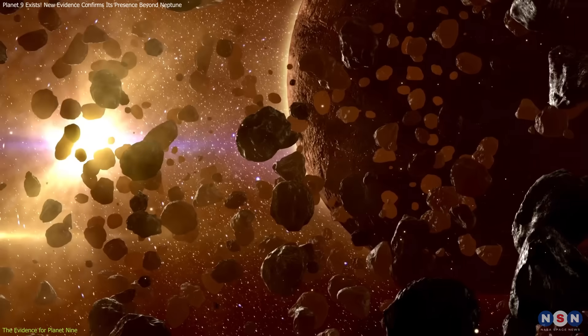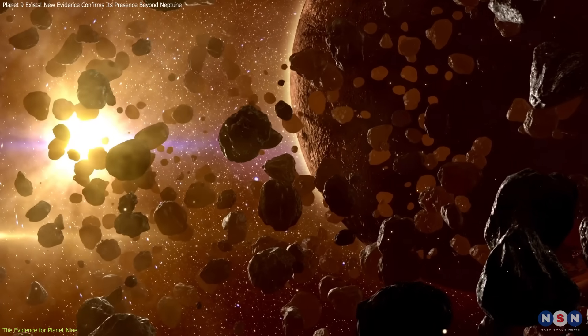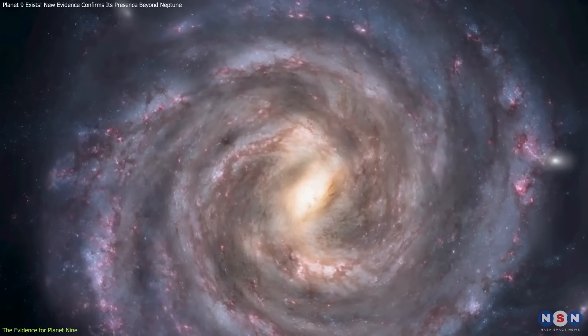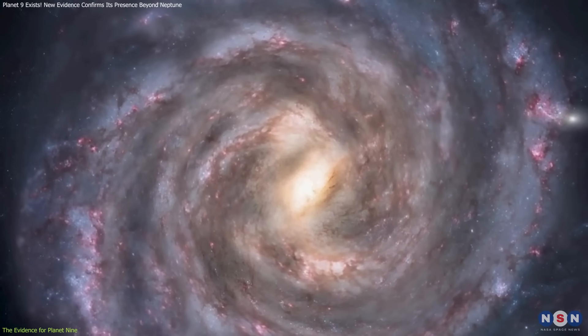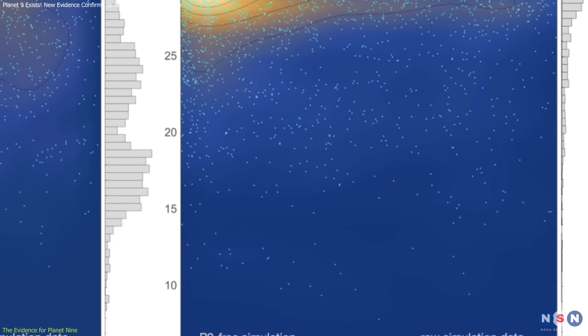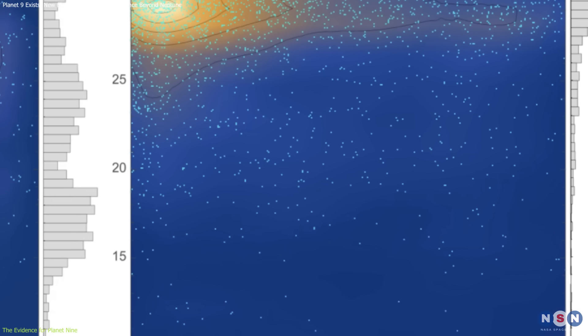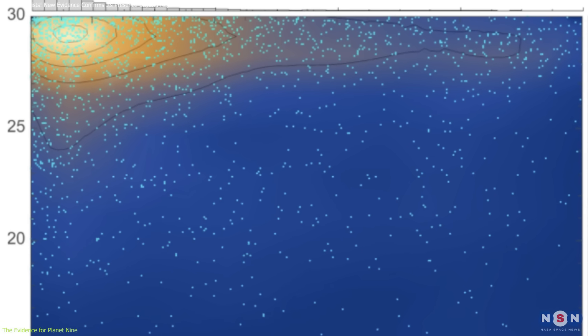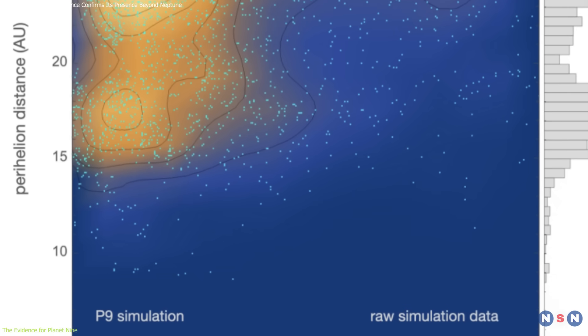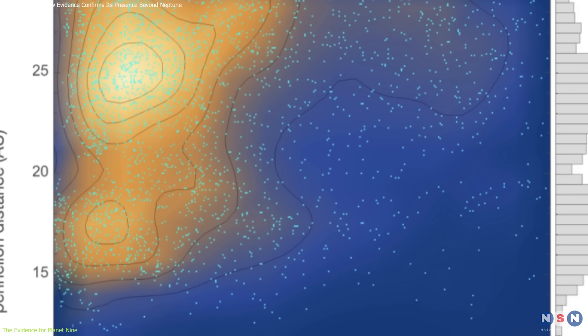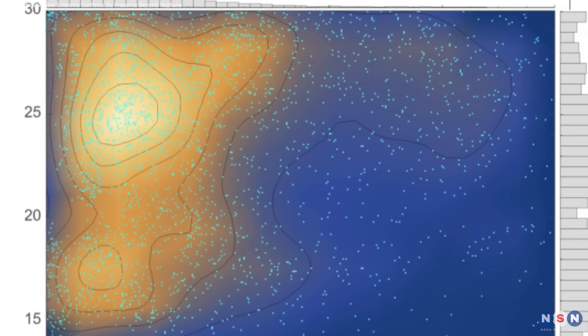What makes this evidence so compelling is that other explanations, like interactions with Neptune or the gravitational pull of the Milky Way, the galactic tide, don't hold up under scrutiny. For example, recent simulations showed that the galactic tide alone can't push these TNOs into the orbits we observe today. But when Planet Nine was added to the model, everything clicked into place. The planet's gravity perfectly matched the observed behavior of these TNOs.